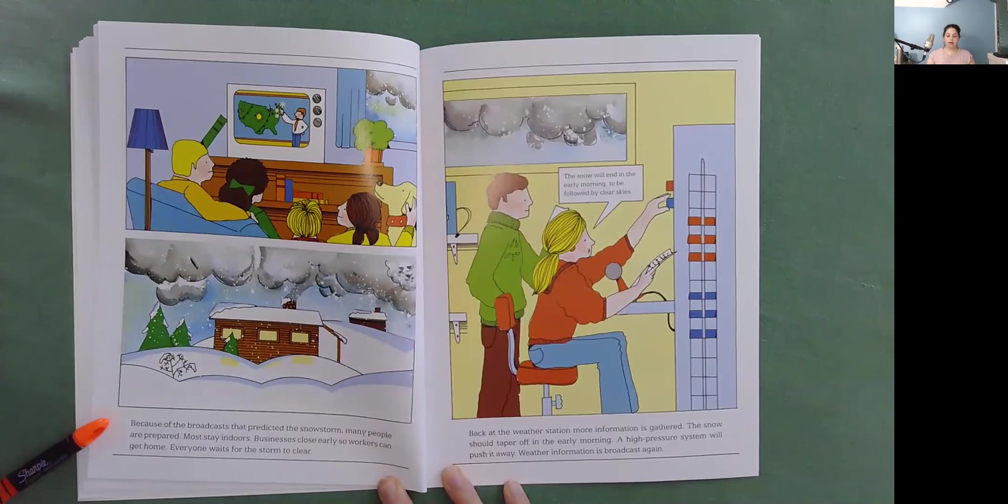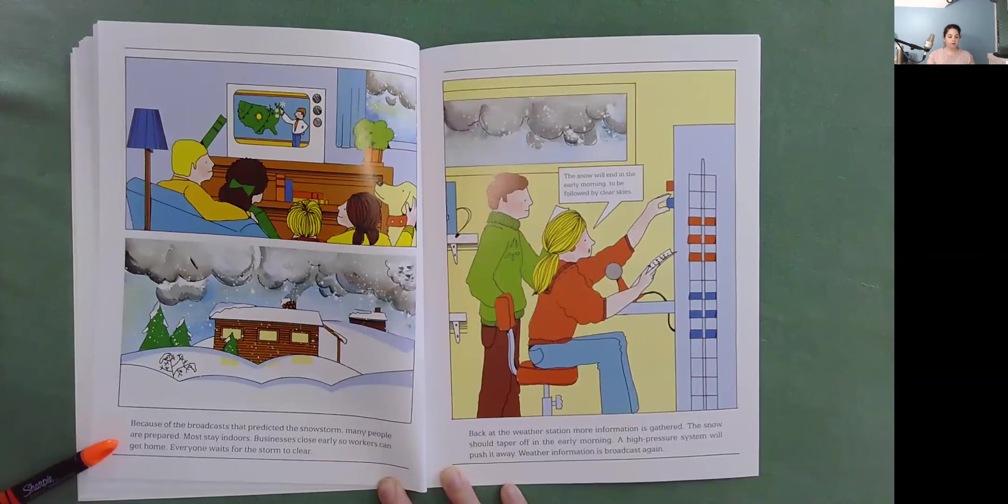Because of the broadcasts that predicted the snowstorm, many people are prepared. Most stay indoors. Businesses close early so workers can get home. Everyone waits for the storm to clear.